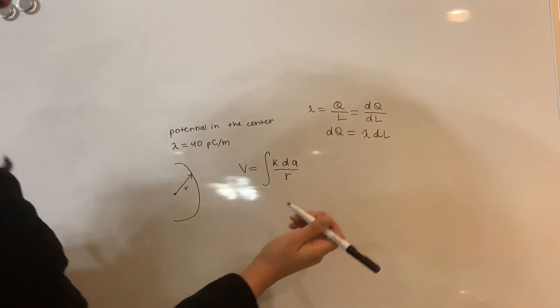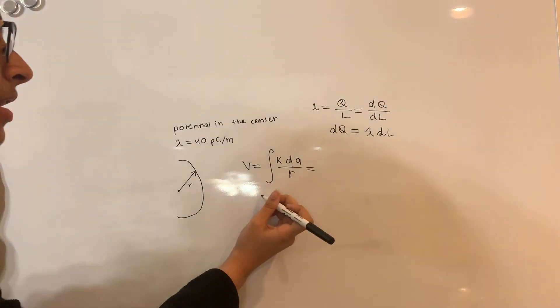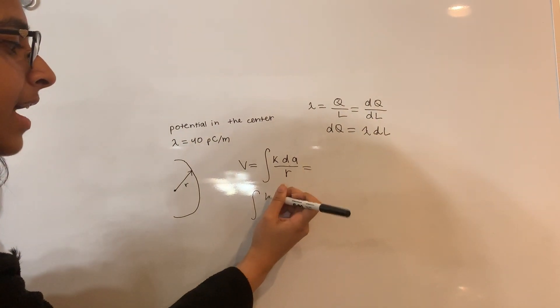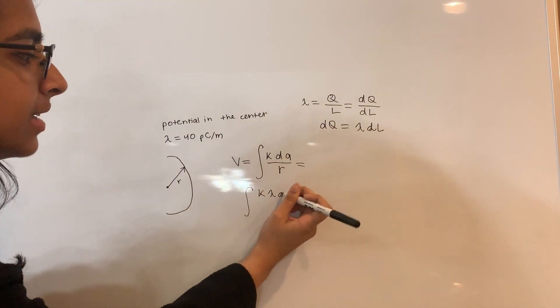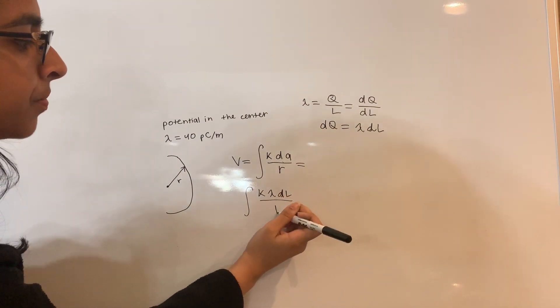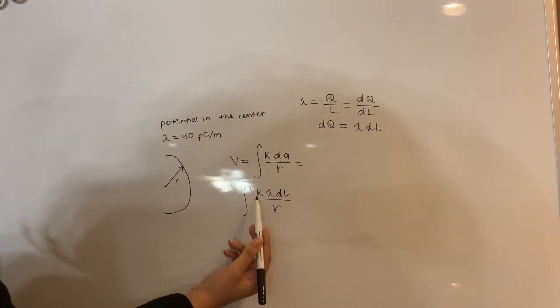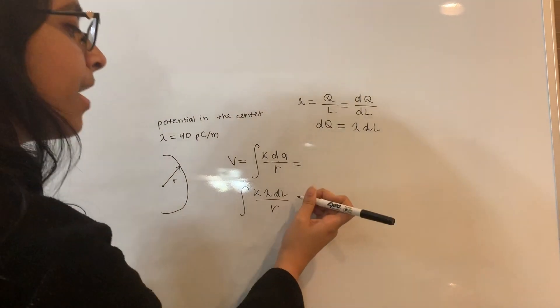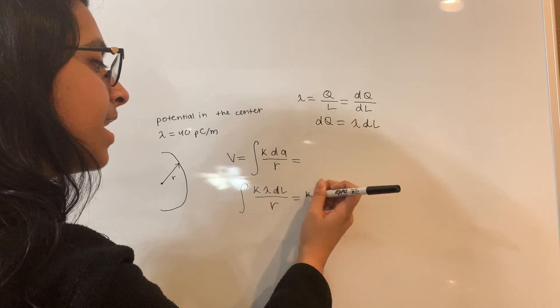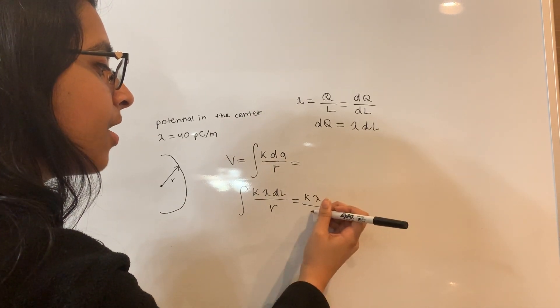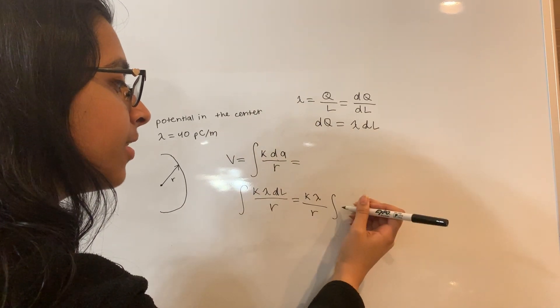Now we plug this back in and we get this equals the integral of k lambda dl over r. And since we're integrating in terms of l, we know that these are all constants. So we can pull them out and we get k lambda over r times the integral of dl.